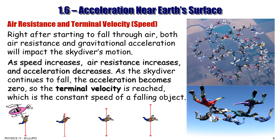As the skydiver continues to fall, the acceleration becomes zero at some point. When acceleration is zero, the velocity is constant. This is what we call terminal velocity — the object reaches its maximum possible speed and does not accelerate further because the forces balance each other. That's how skydivers reach a certain speed and cannot accelerate anymore.